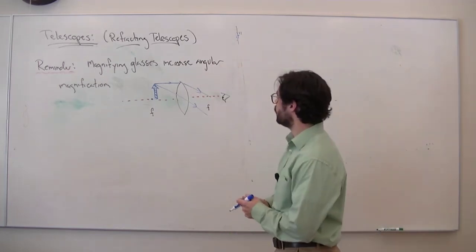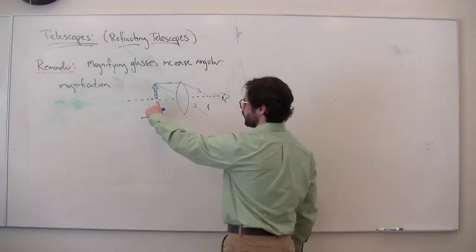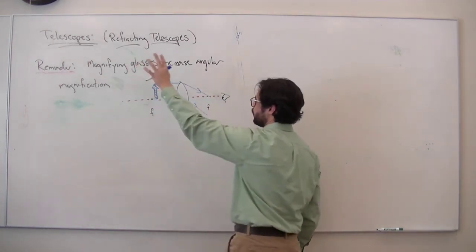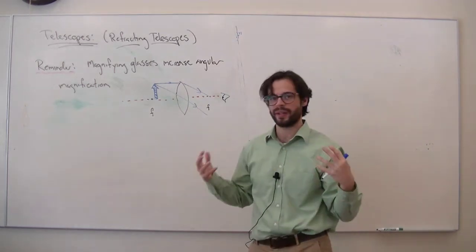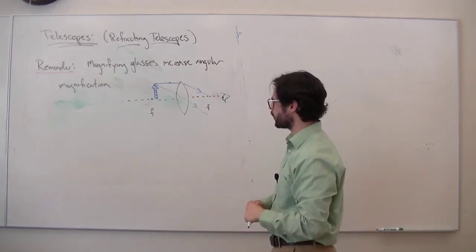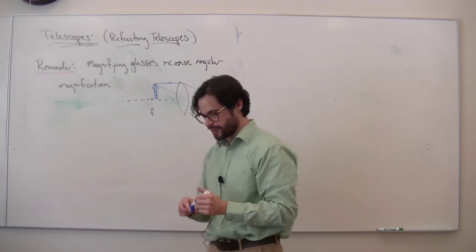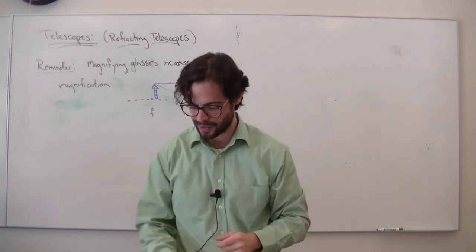So what you do is you tuck the thing inside the focal length and then you're going to get this whopping big virtual image and it makes it look big. So that's how a magnifying glass works. So remember that, that's one of the basic elements of a telescope and a microscope.